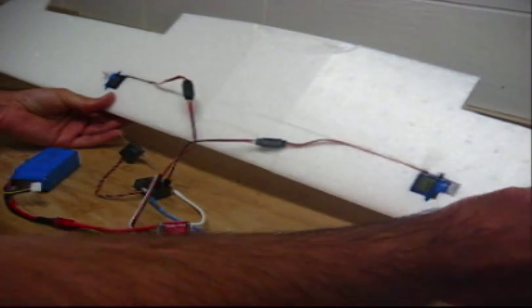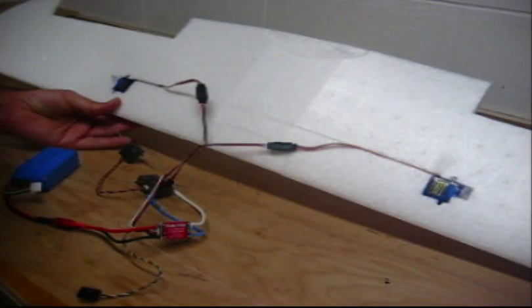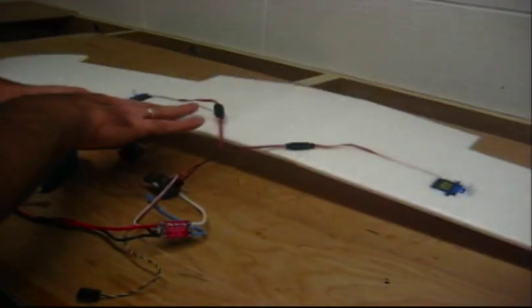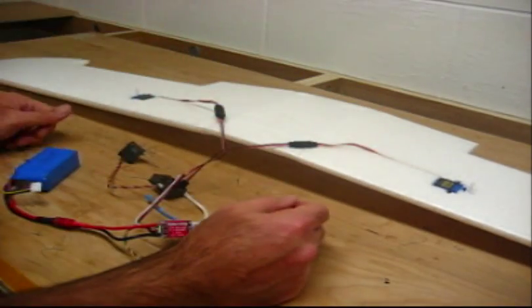As you can see here, the horn is to the outside of that wing, the servo horn is to the outside of that wing. If you had the horns on both sides, the servos would both go in the same direction.